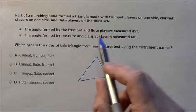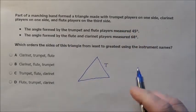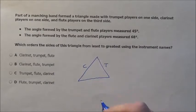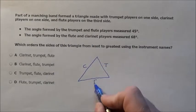So here's what we're going to do. We have trumpet players on one side, I'm just going to put T for trumpet players, clarinet on a side, there's clarinet, and then flute, flute players down here.